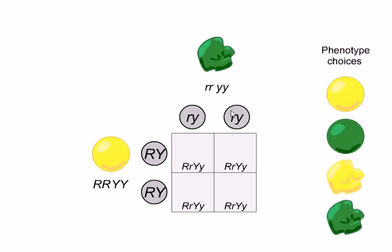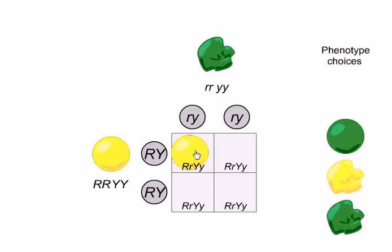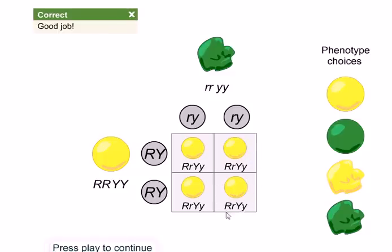The cross is already given: caps R, small r, caps Y, small y. Since caps R dominates and caps Y dominates, all offspring are heterozygous but show dominant phenotypes. Whether homozygous dominant or heterozygous, R is dominating and Y is dominating, meaning round and yellow is the result for all squares. All F1 individuals show the dominant yellow and round phenotypes; the recessive alleles are present but masked by the dominant alleles.